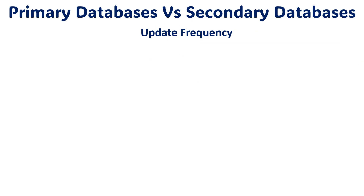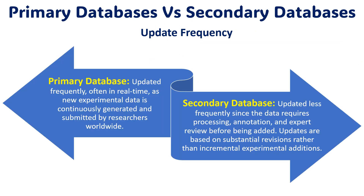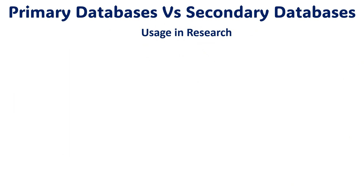Regarding update frequency: primary databases are updated frequently, often in real time, as new experimental data is generated and uploaded by researchers worldwide. Secondary databases update less frequently, since data requires processing, annotations, and expert review before being added. So secondary database update frequency is lower compared to primary databases because it requires processing and analysis.